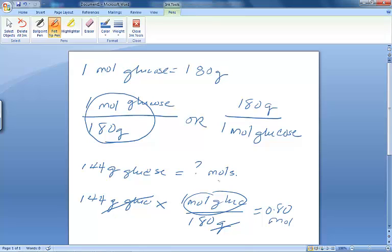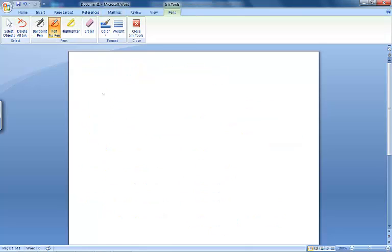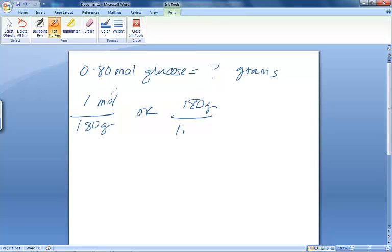Let's do it the other way around, just to prove a point. Let's say 0.8 moles of glucose is equivalent to how many grams? So our conversion factors, again, were 1 mole is 180 grams, or 180 grams is 1 mole. And again, this is specific only for glucose. Alright, so now my given is 0.80 moles. That is my given.